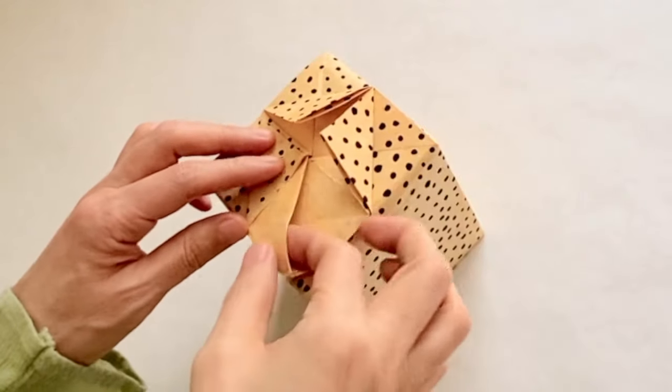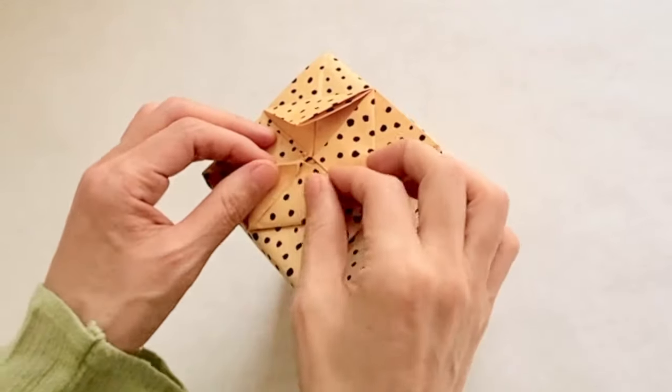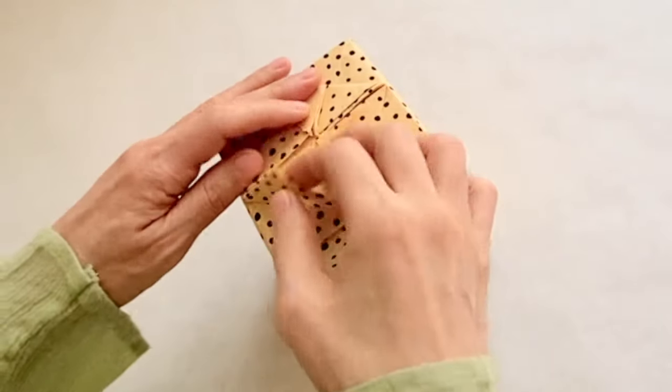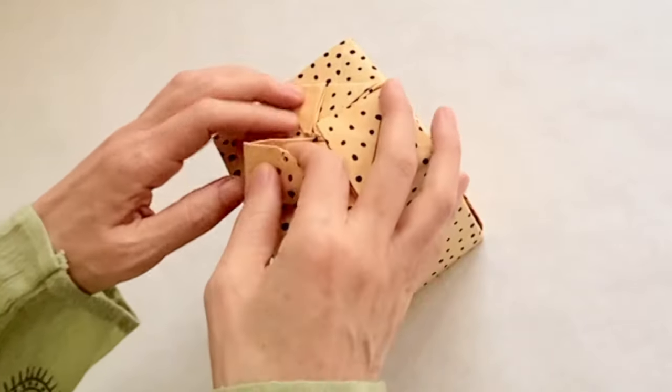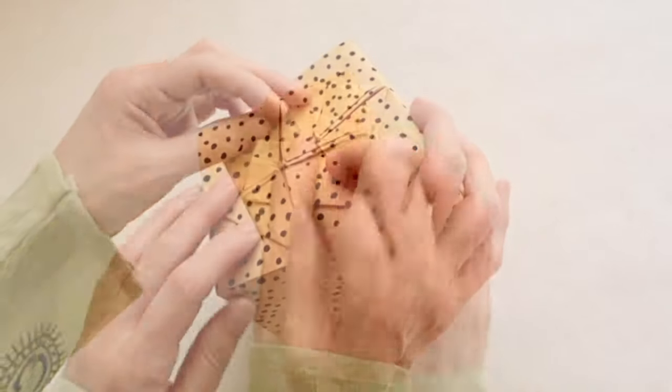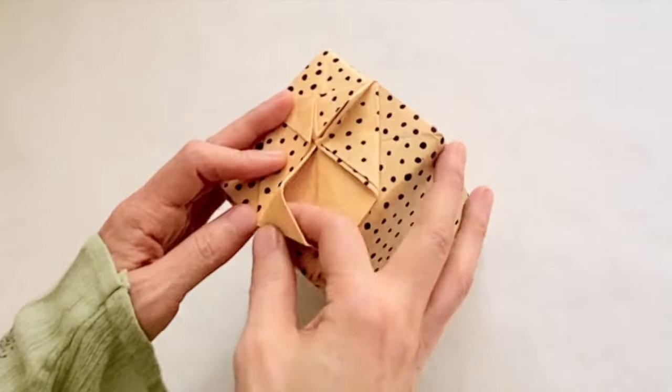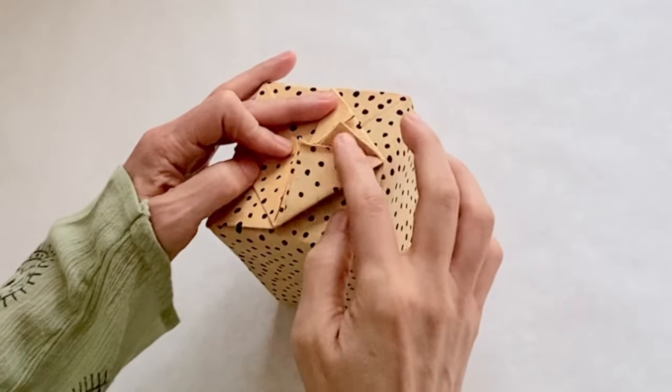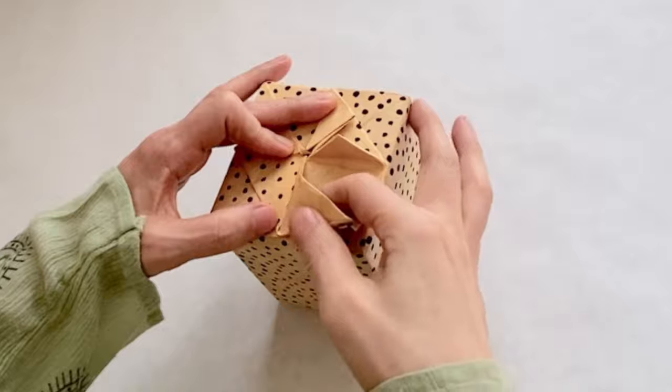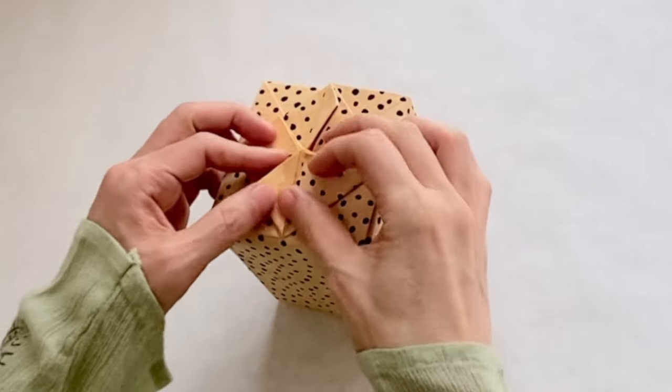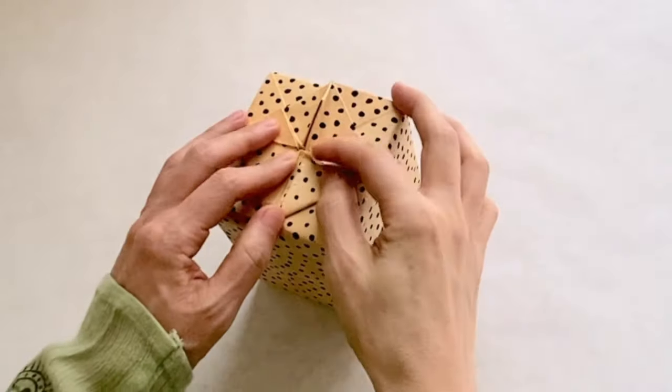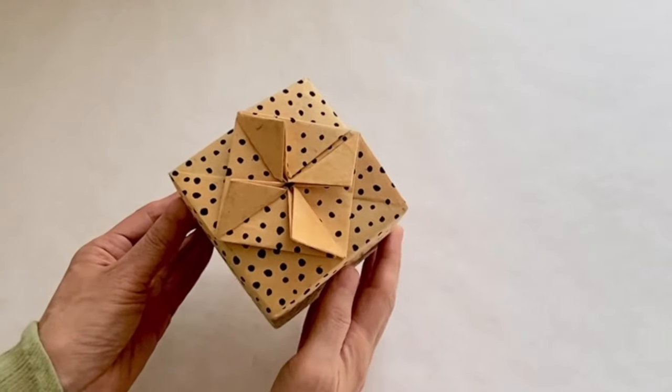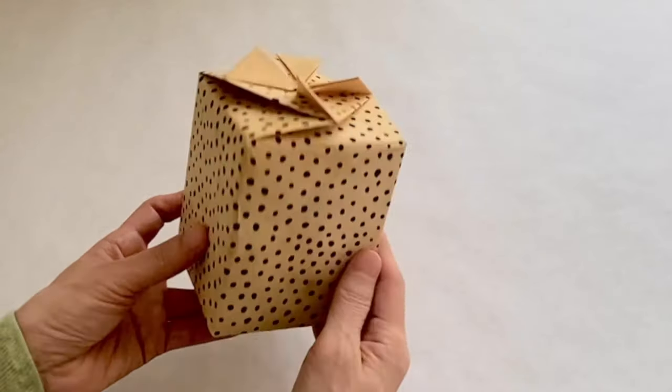Unfold, then flip and open this part and fold it like this. Follow the same steps for the other three flips. The last one does the same after opening the first crease, then put it back. Here you are, it's done.